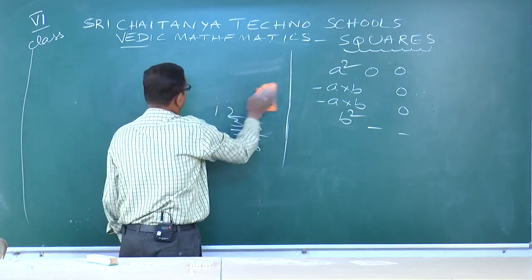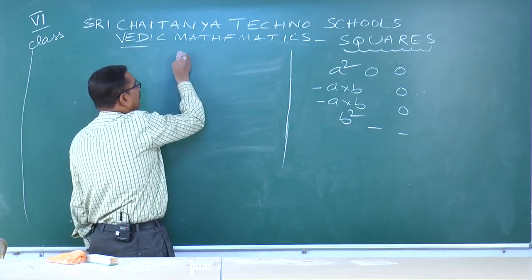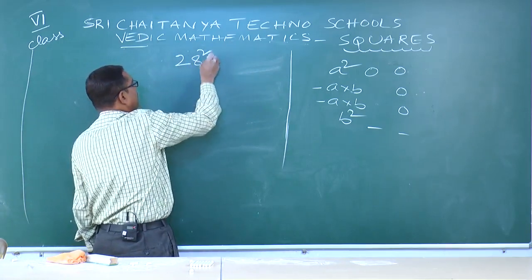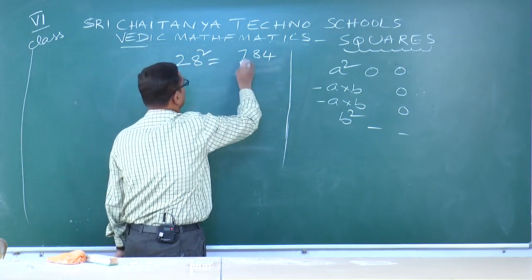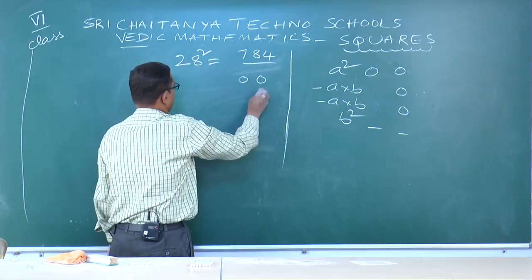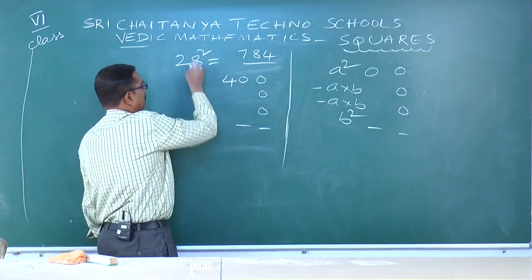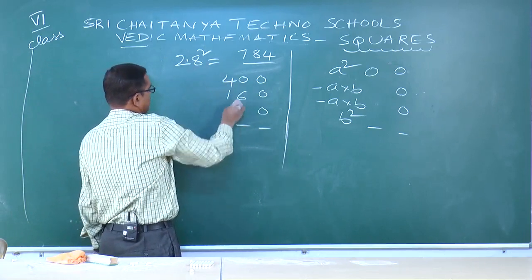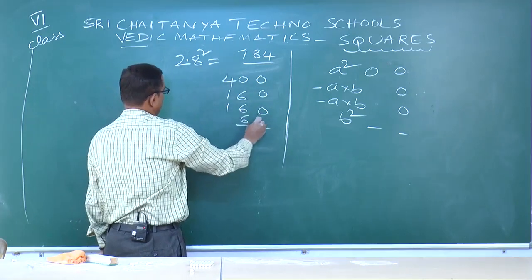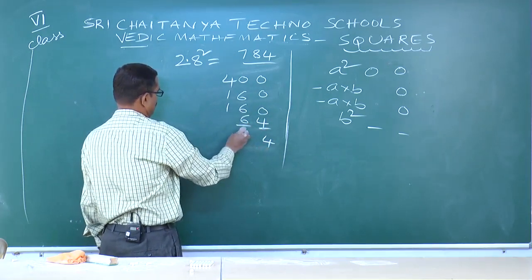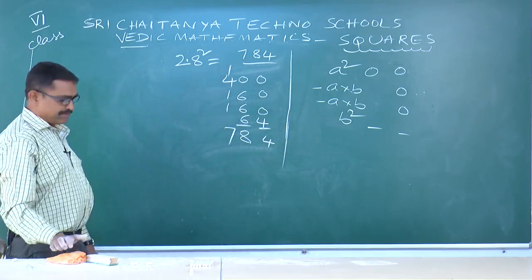Next: 28² = 784. a=2, b=8. a²=2²=4, a×b=2×8=16, a×b=16 again, b²=8²=64. Add: 4; 18; — answer is 784.